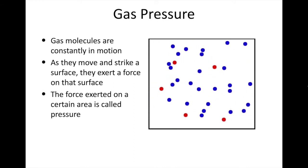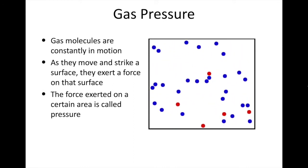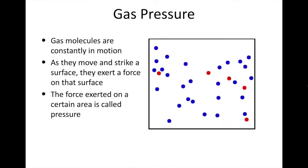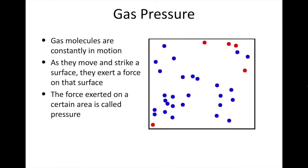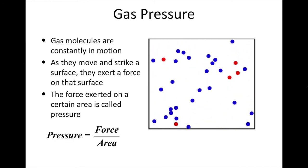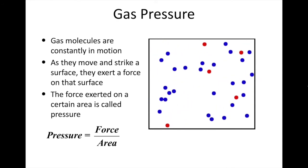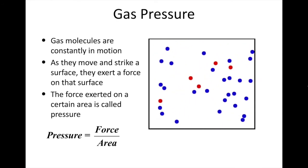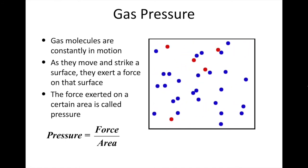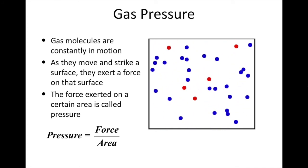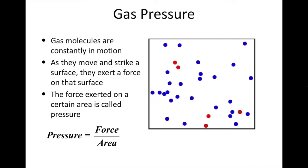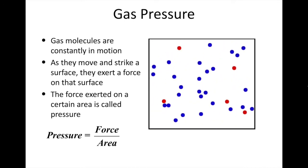The force that is exerted on a certain area is called the pressure. We can show this using this formula. The pressure exerted by a gas in a container is equal to the force with which the gas molecules strike the container divided by the area of that container.